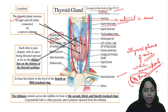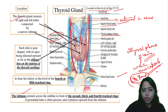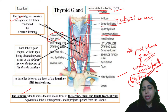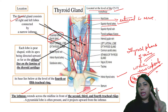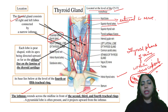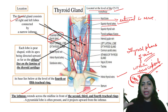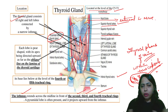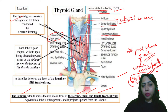The isthmus is the middle junction connecting the two lobes, lying against the second, third, and fourth tracheal rings. You can identify it as a connector between the right and left lobe. It is supplied by the third thyroid artery called the thyroidea ima artery.